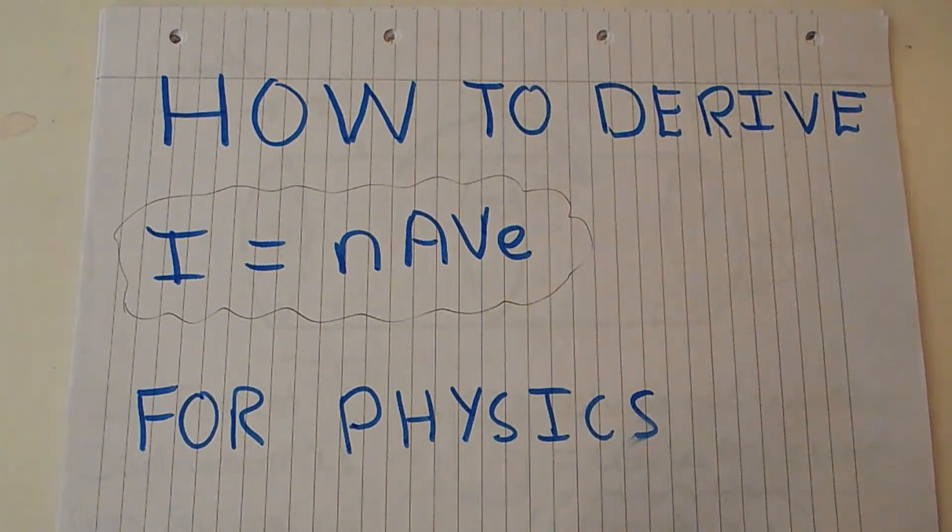Alternatively, you could be given questions involving the equation I equals nAve, so perhaps they give you the current, the electron density, the diameter of a wire and they also tell you, just in case you've forgotten on your formula sheet, the fundamental charge on an electron.